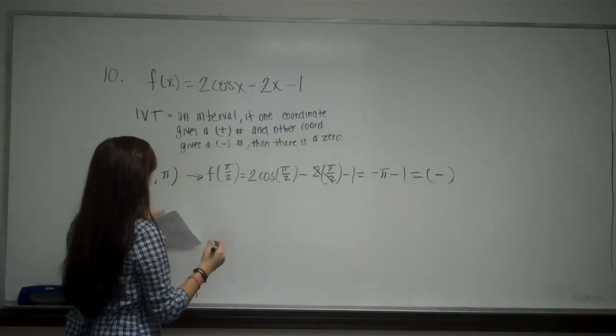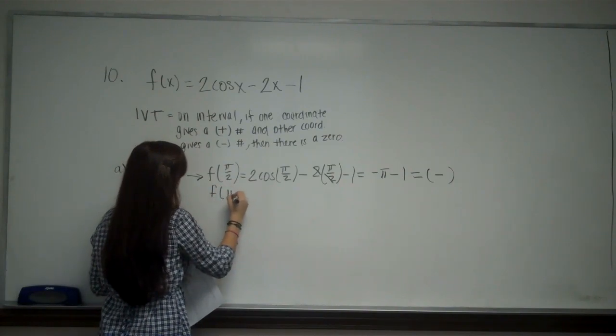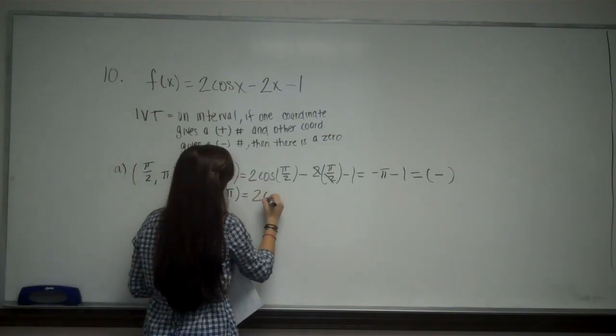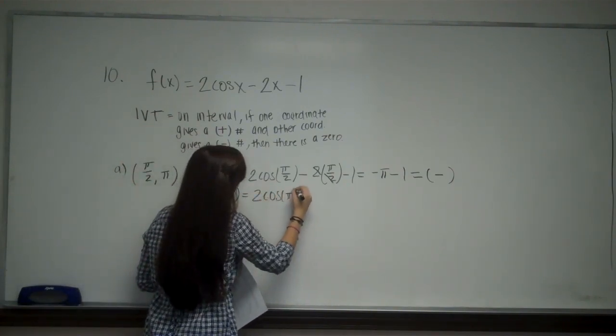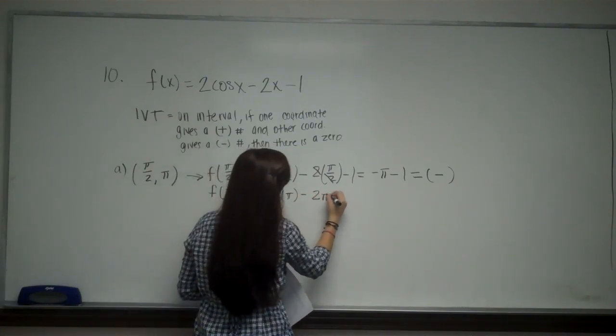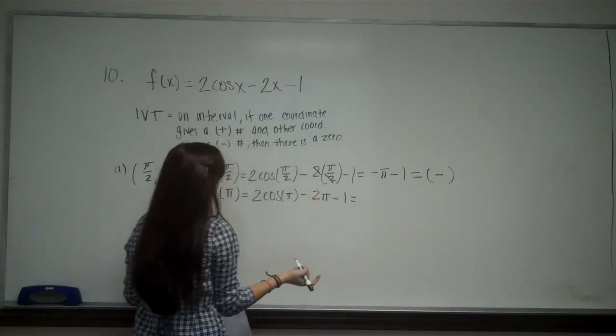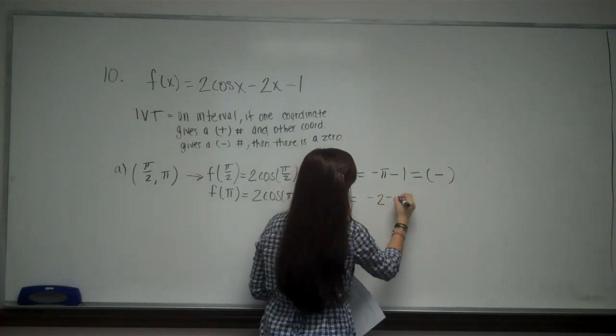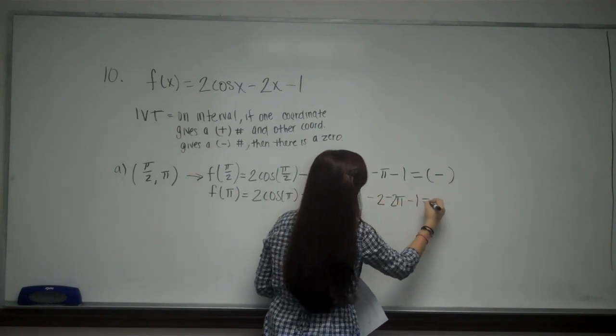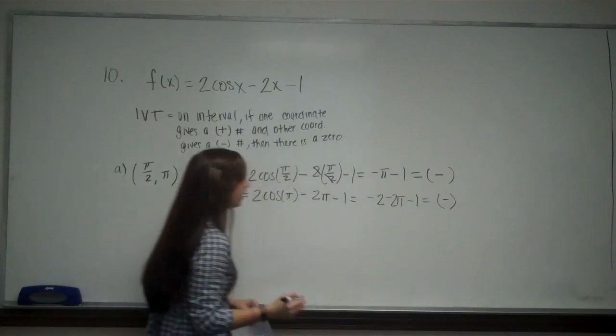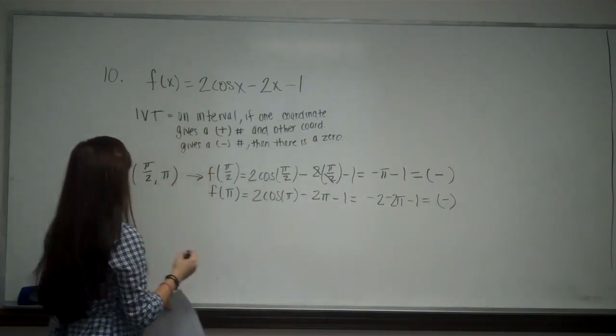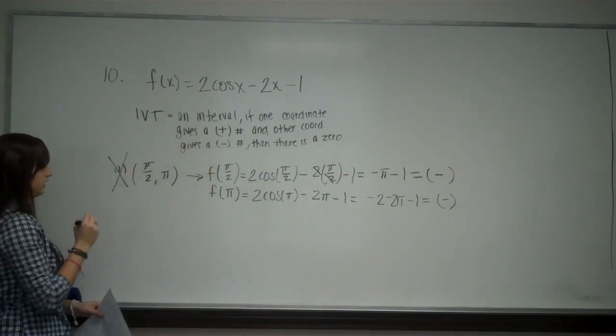And now I am going to try f(π), the other coordinate. So I have 2cos(π) - 2π - 1. Cosine of π is -1, so -2 - 2π - 1. We know that this is also going to be a negative value. Because those are both negative, we know that A does not work.